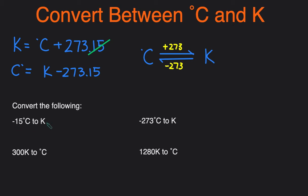Negative 15 degrees Celsius we have to convert that to Kelvin, so from degrees Celsius to Kelvin you just add 273, so add 273 to this and we'll get 258 degrees Kelvin.